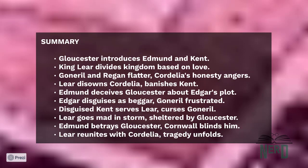Gloucester later meets the mad Lear on Dover Beach near Cordelia's camp. With Kent's aid, Lear is rescued and reunited with Cordelia. Gloucester, now reunited with Edgar, dies quietly alone.